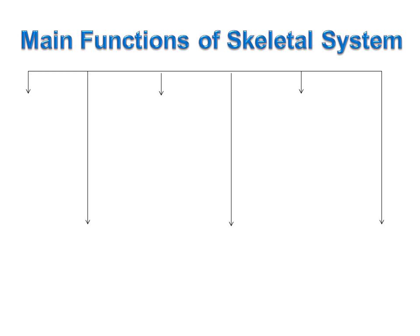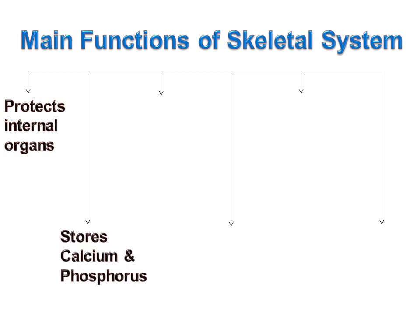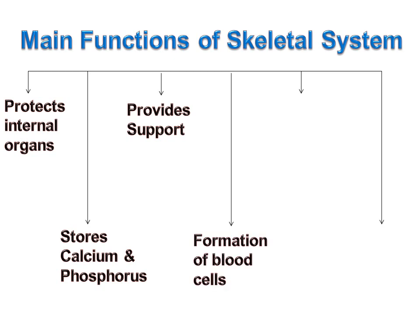Now let's learn the functions of the skeletal system. The first function is that it protects internal organs, as bone is the hardest connective tissue. The second function is that bones store calcium and phosphorus. The third function is that it provides support — because without these minerals, bones would flex and provide little support. The fourth function is the formation of blood cells, which takes place in the bone marrow.